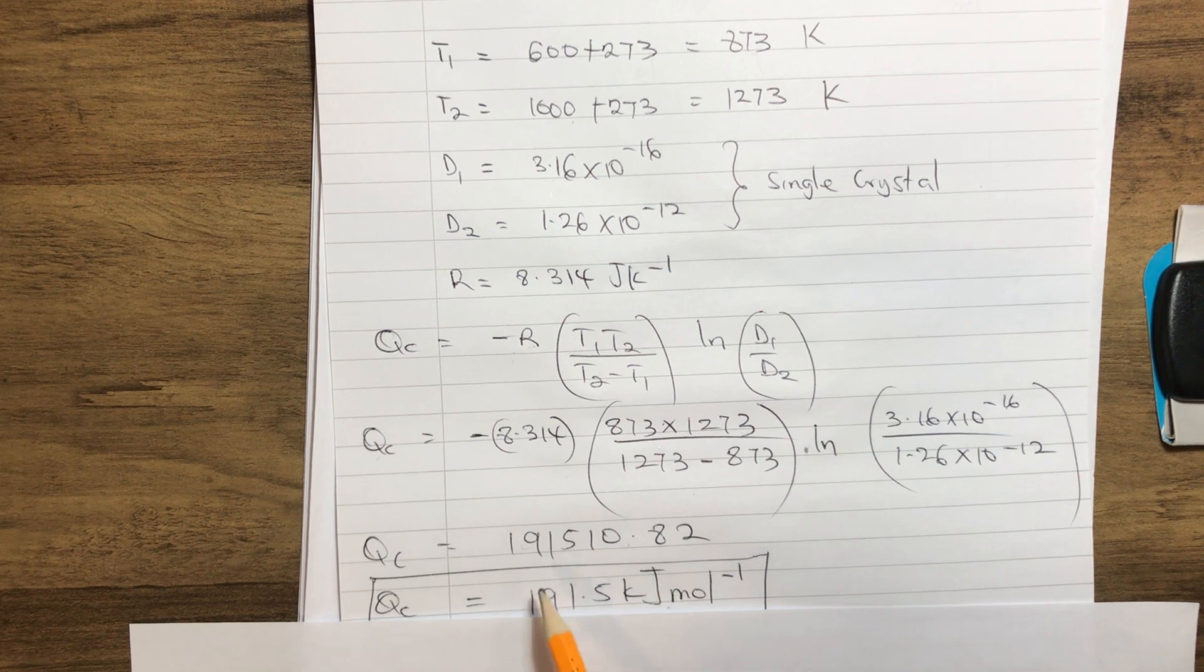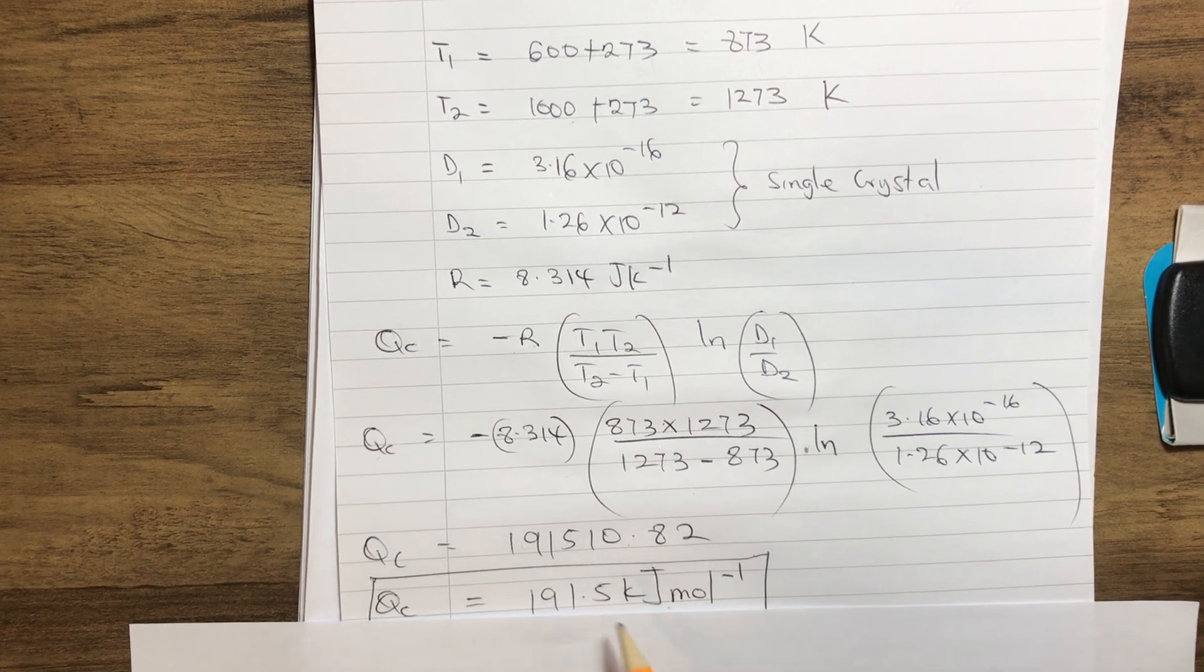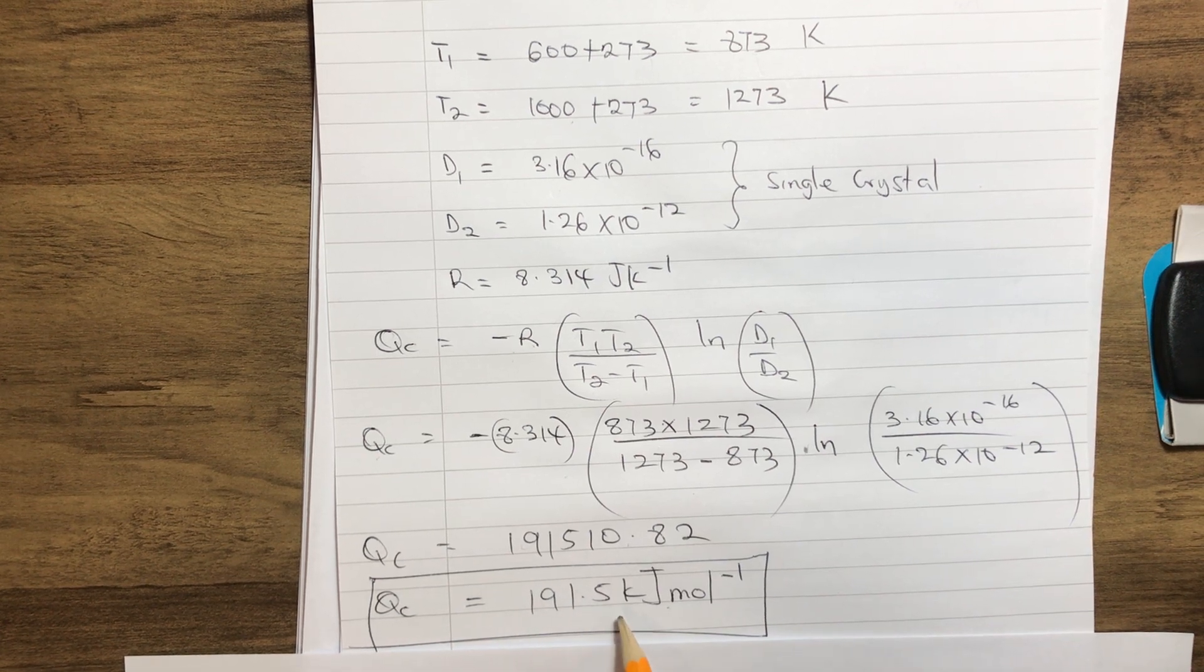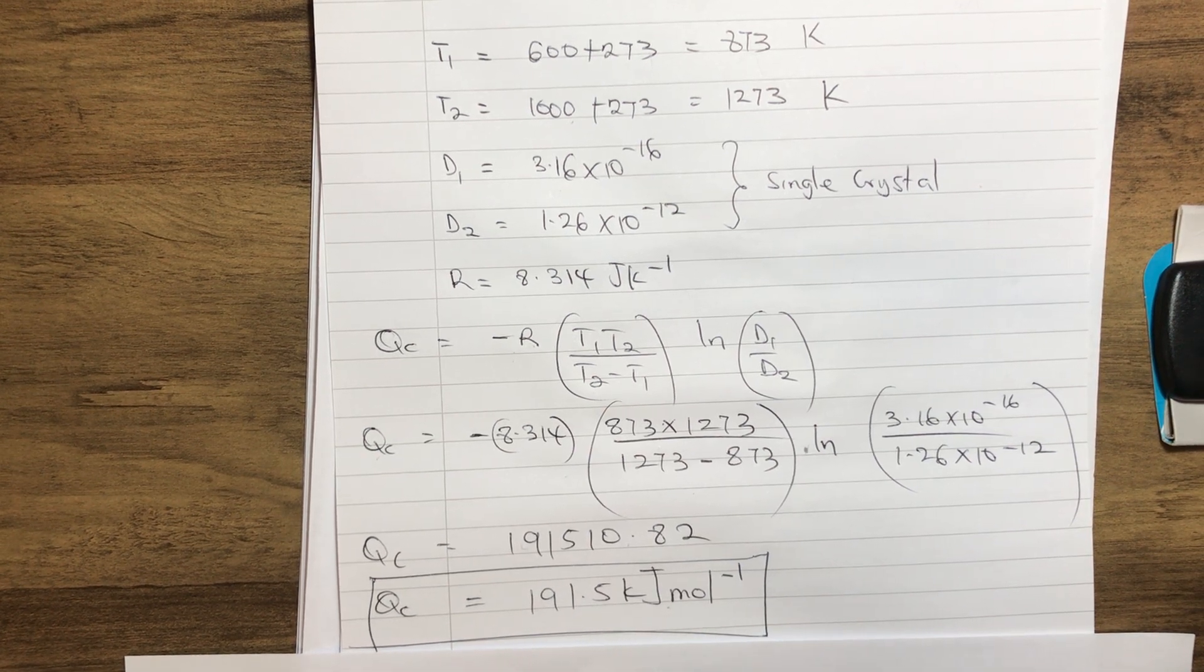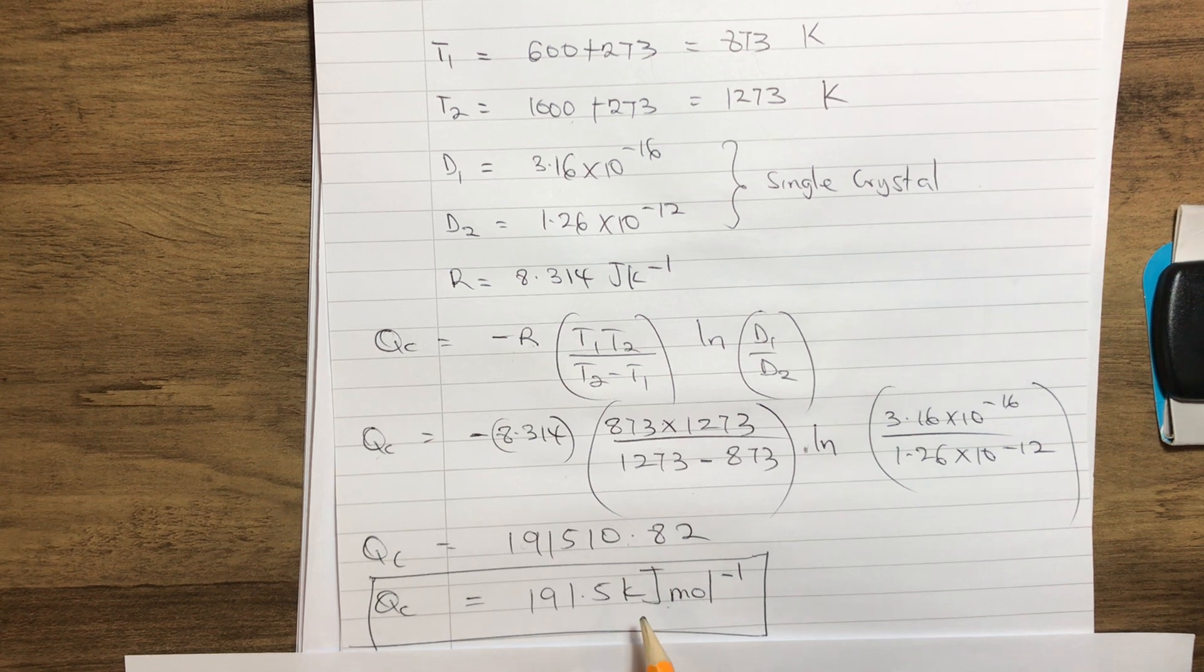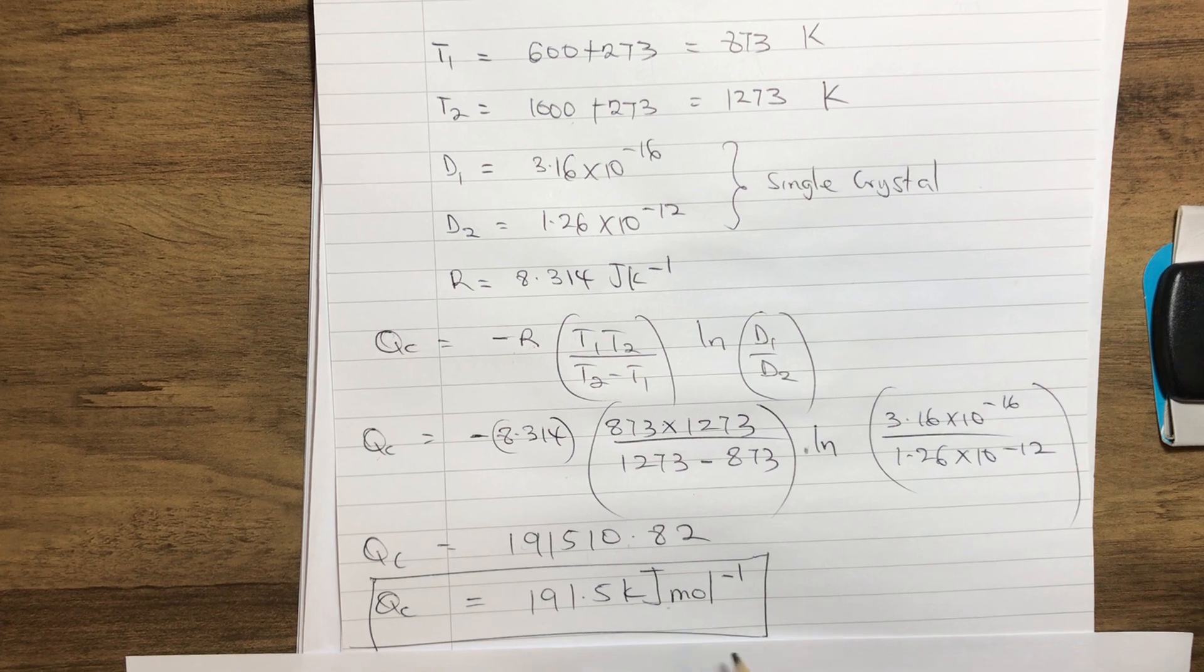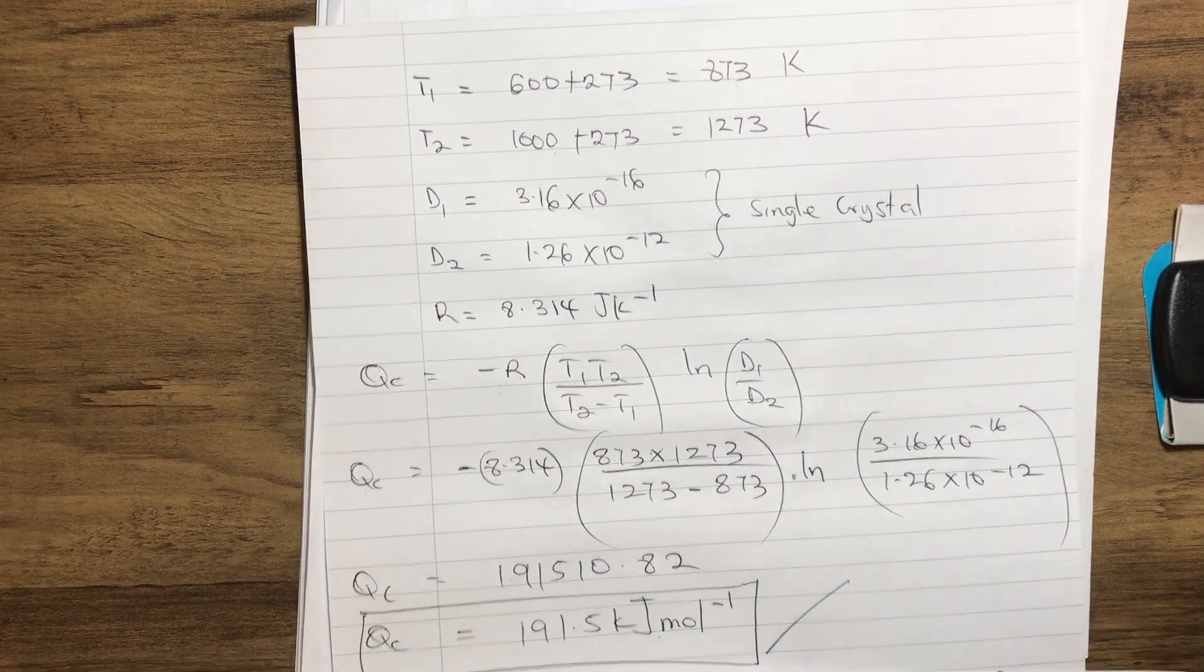Now in order to convert it to kilojoules, we need to divide it by 1000, which gives us 191.5 kilojoules per mole. So our single crystal activation energy gives us 191.5 kilojoules per mole. Thank you.